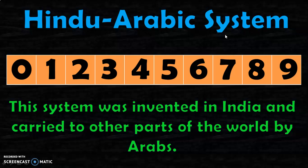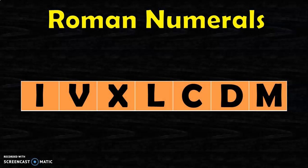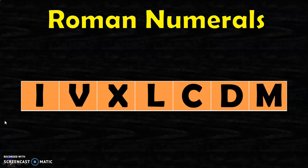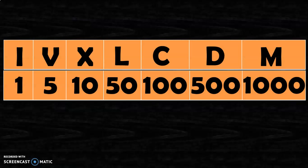Now we are going to learn something new called Roman numerals. In Roman numerals they deal with 7 symbols or numerals. They are I, V, X, L, C, D, and M. Let us see how these 7 Roman numerals are related to the Hindu-Arabic system.